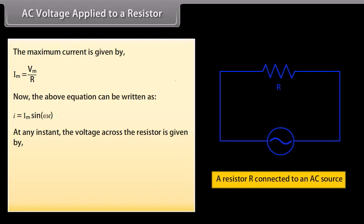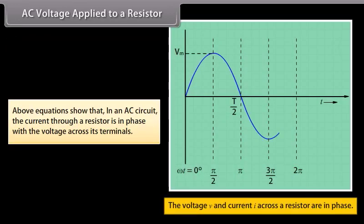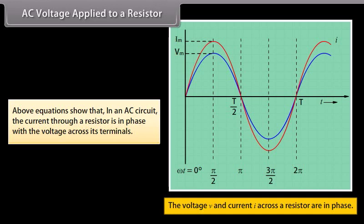At any instant, the voltage across the resistor is given by VR = IR. Putting the value of I, we get VR = Vm sin(ωt). This equation shows that in an AC circuit, the current through a resistor is in phase with the voltage across its terminals.